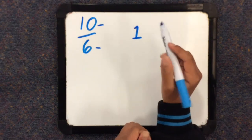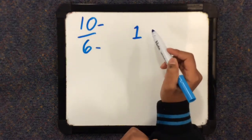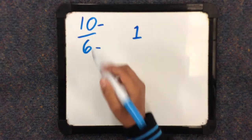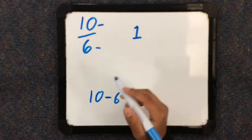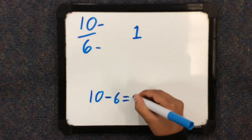And now to find out the numerator for our mixed fraction, we're going to do 10 minus 6 to find out the remainder, which is 4.